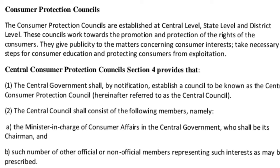Number one: the Central Consumer Protection Council. Section 4 provides that the central government shall, by notification, establish a council to be known as the Central Consumer Protection Council. The central council shall consist of the following members: number one, the minister in charge of consumer affairs in the central government, who shall be its chairman; and such number of other official or non-official members representing such interests as may be prescribed.